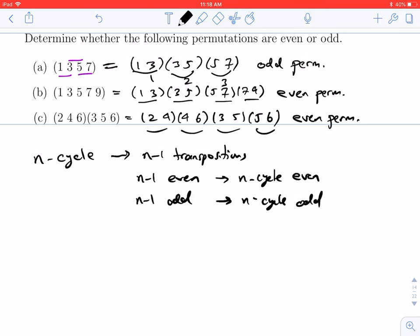If n minus 1 is even, that means that n is odd. And if n minus 1 is odd, then n is even.